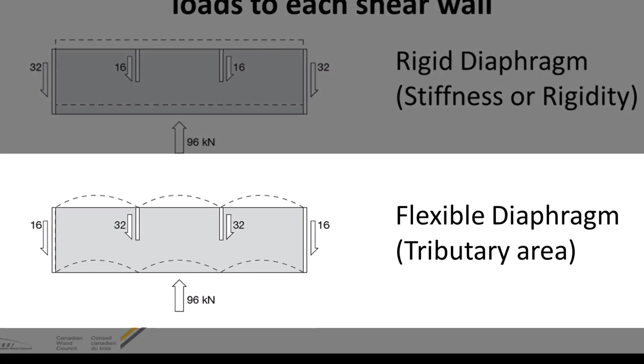The figure on the bottom demonstrates flexible distribution for the same 96 kN. In this case, the load is distributed to the shear lines based on the tributary area between the shear lines.